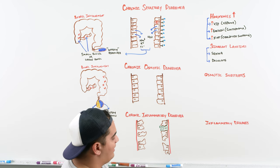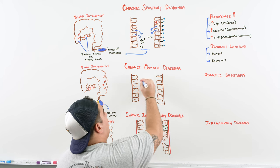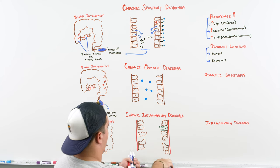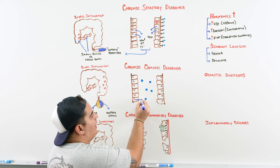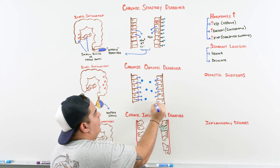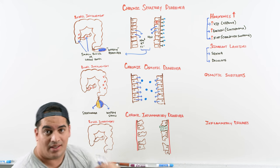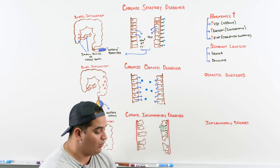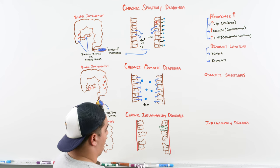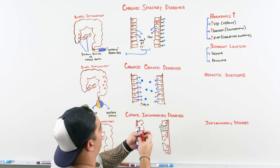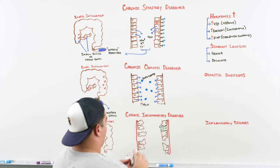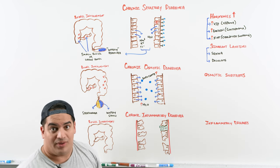The mechanism of osmotic diarrhea is straightforward: an osmotic substrate literally yanks water from the vascular system around the intestinal cells into the actual stool. This substrate pulls in water and other molecules, producing a very watery stool with lots of water and osmotic substrate.